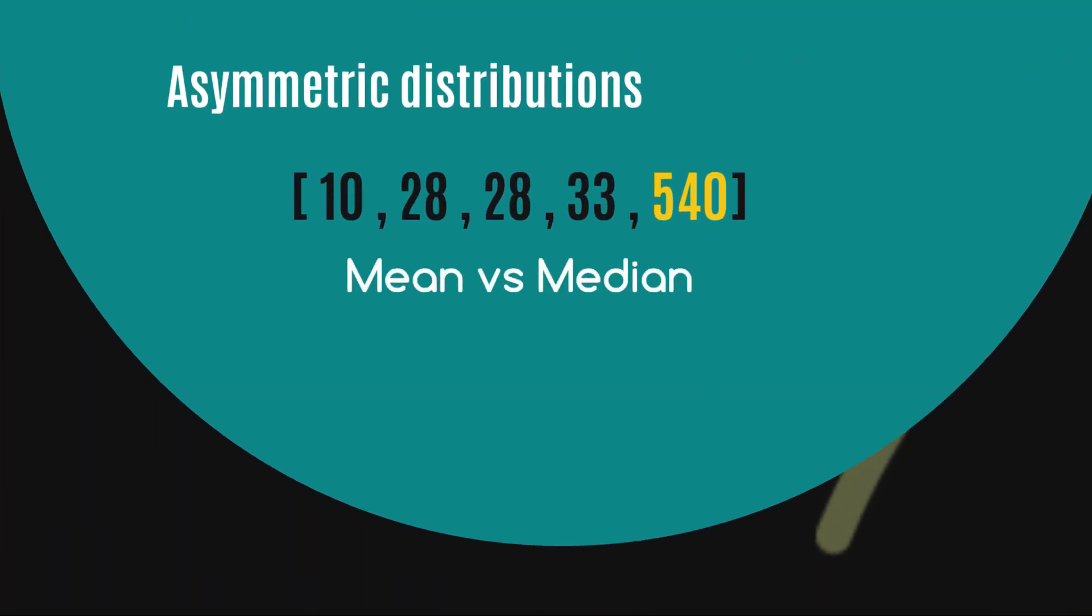Now what happens if I take away the 54 and replace it with 540? What are our two calculations going to be? Let's have a look at the mean versus the median here. So our calculation for the mean was 127.8 in this situation, because you're going to be adding up all the observations and dividing by five, whereas the median hasn't actually budged. The median is still 28.